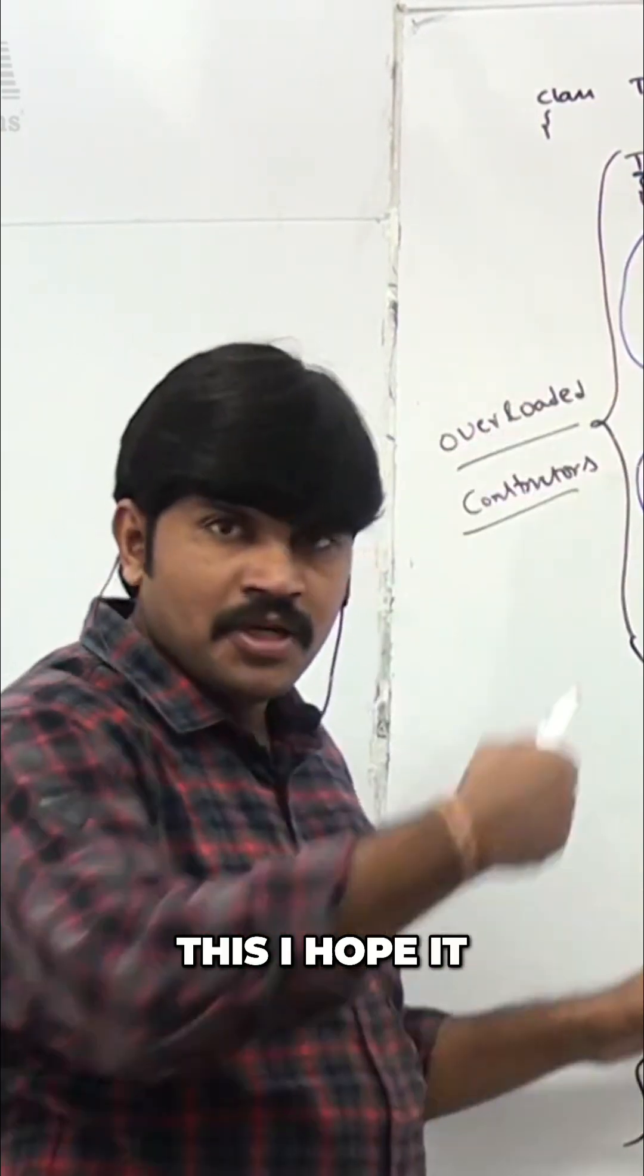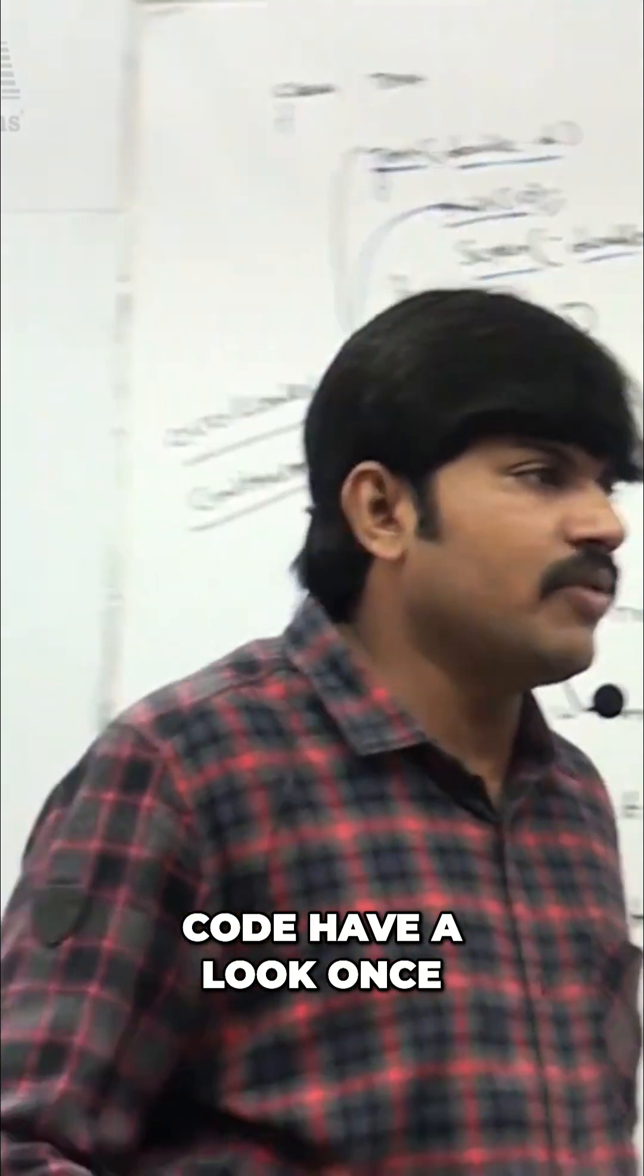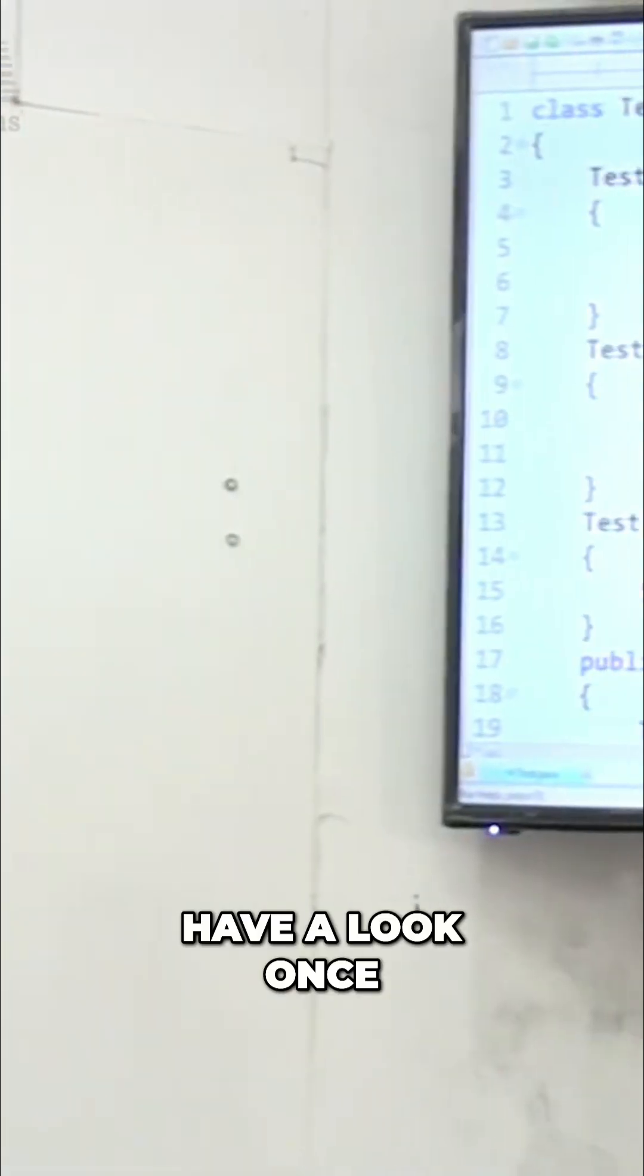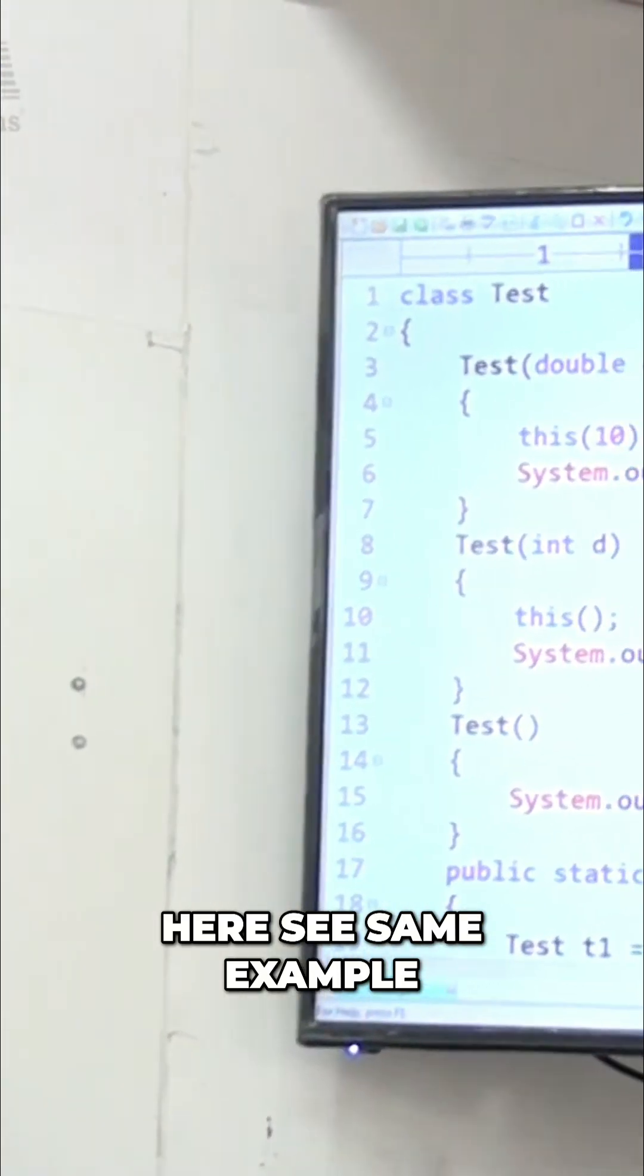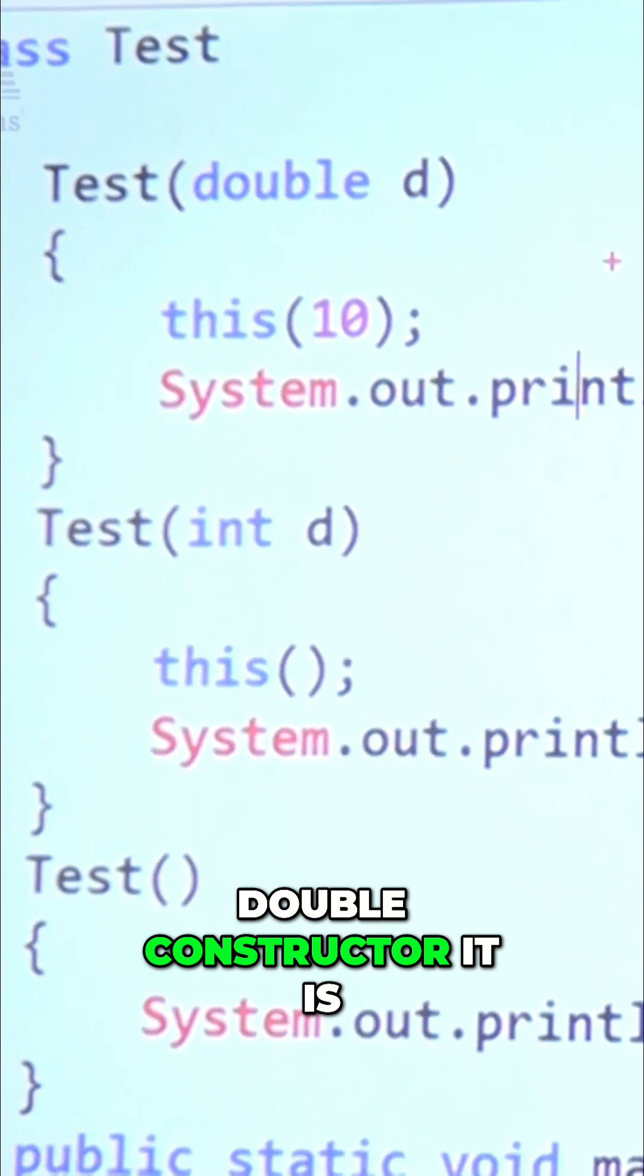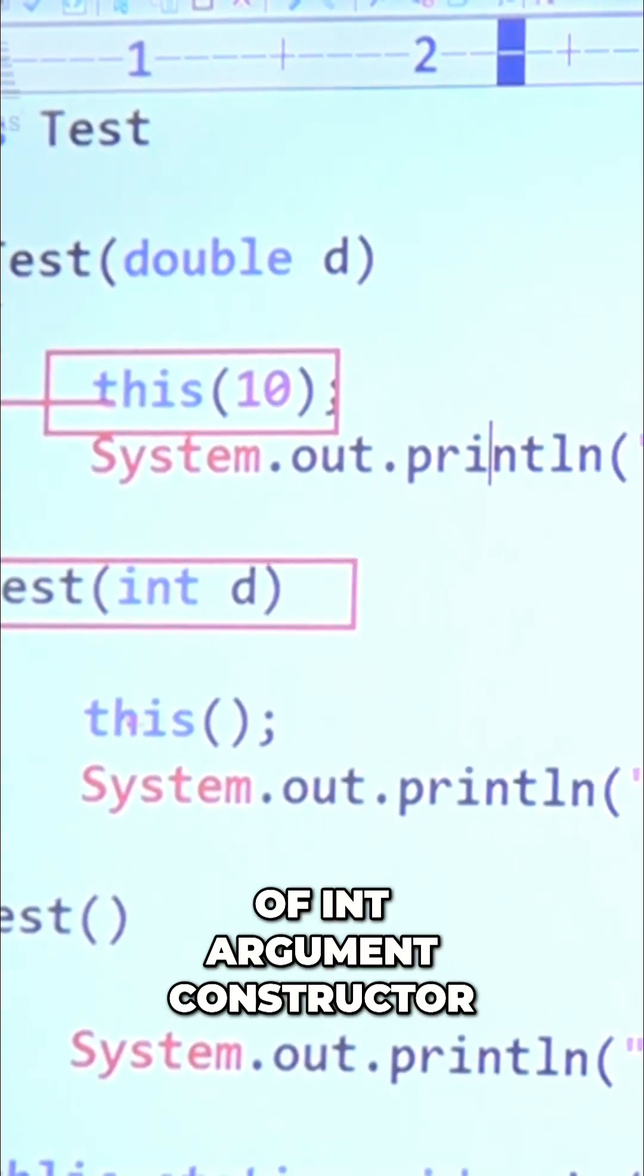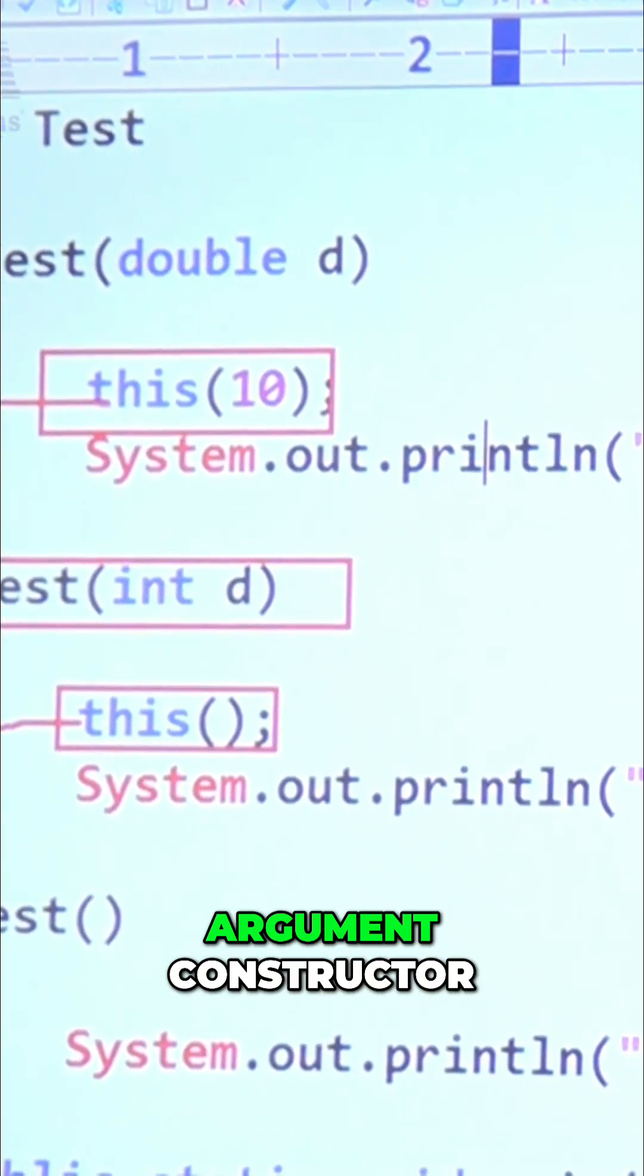I hope it is very clear for you people. Now let me execute this code. Have a look once. Here, see same example - class Test. Double arg, you are part of the double constructor. It is calling the int argument constructor. You are part of the int argument constructor. It is calling the no-argument constructor.